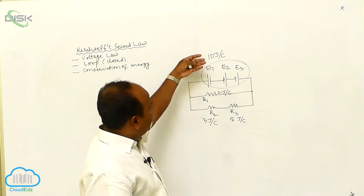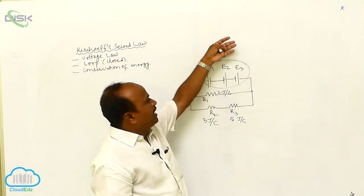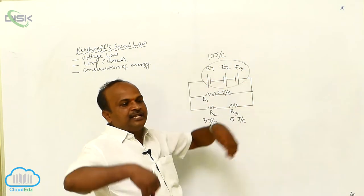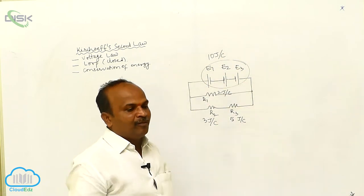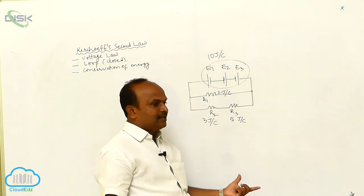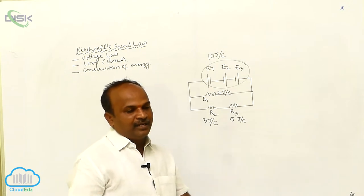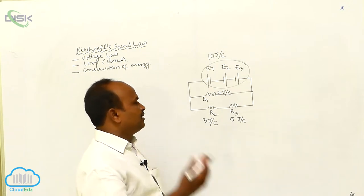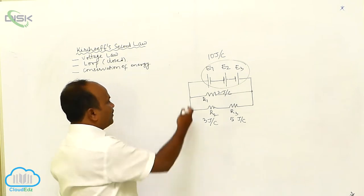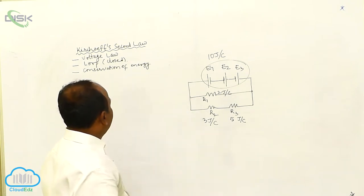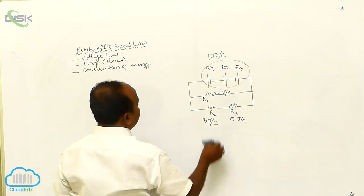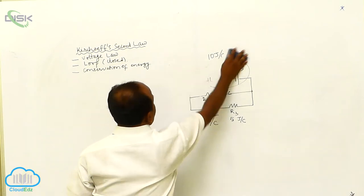For example, these cells may supply 10 joules per coulomb, and these 10 joules per coulomb are utilized among the resistors — equally or not equally, according to the resistance values. Therefore, according to Kirchhoff's second law, what is the statement?